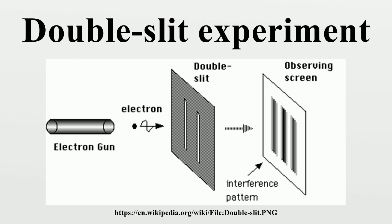However, the later discovery of the photoelectric effect demonstrated that under different circumstances, light can behave as if it is composed of discrete particles. These seemingly contradictory discoveries made it necessary to go beyond classical physics and take the quantum nature of light into account. The double-slit experiment has become a classic thought experiment for its clarity in expressing the central puzzles of quantum mechanics, because it demonstrates the fundamental limitation of the ability of the observer to predict experimental results. Richard Feynman called it a phenomenon which is impossible to explain in any classical way, and which has in it the heart of quantum mechanics — in reality, it contains the only mystery of quantum mechanics. Feynman was fond of saying that all of quantum mechanics can be gleaned from carefully thinking through the implications of this single experiment.